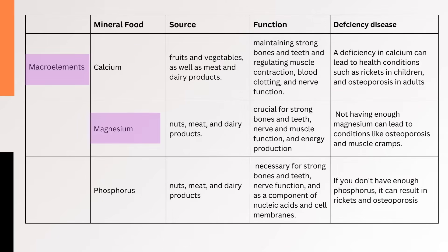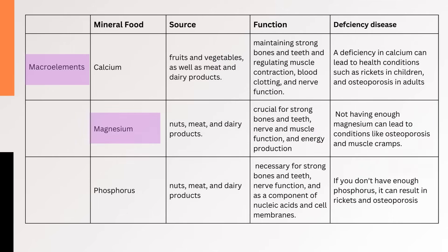2. Magnesium — Magnesium is crucial for strong bones and teeth, nerve and muscle function, and energy production. You can find it in nuts, meat, and dairy products. Not having enough magnesium can lead to conditions like osteoporosis and muscle cramps.